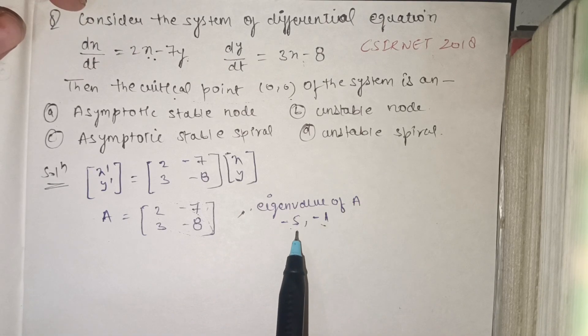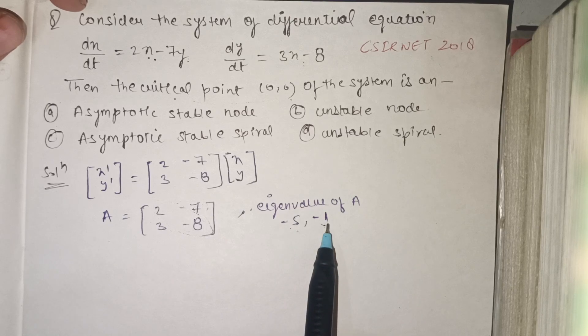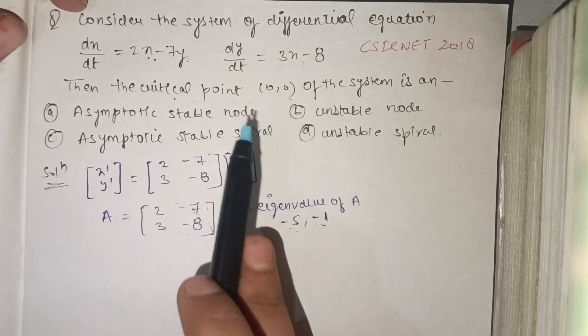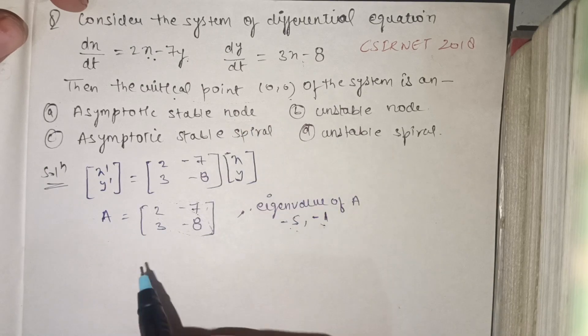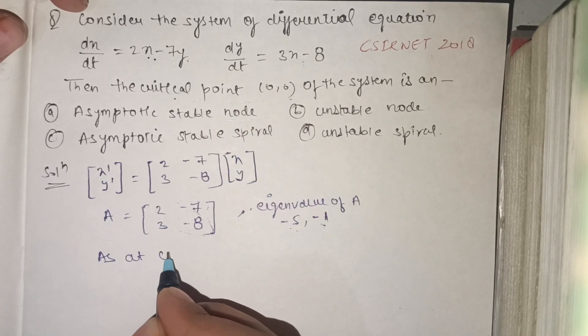As two eigenvalues are distinct, it is a stable node. So it is a node.